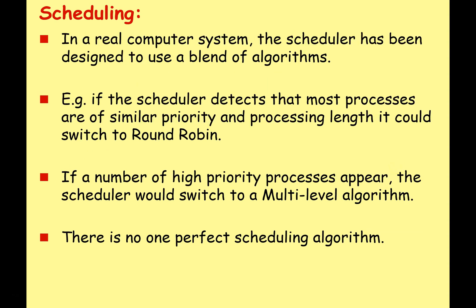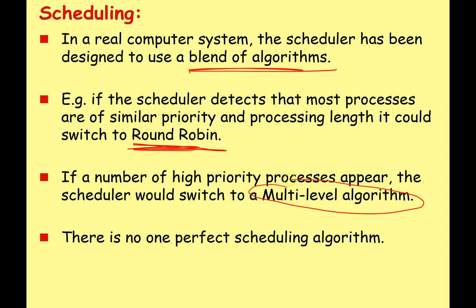In a real computer system, schedulers are designed to use a blend of algorithms. For example, if the scheduler detects that most processes are of similar priority and processing length, it could switch to round robin, which is simple to implement and in that situation wouldn't lose any efficiency. However, if a number of high-priority processes appear, the scheduler could switch to the multi-level feedback queue algorithm to make sure those high-priority tasks get done first.